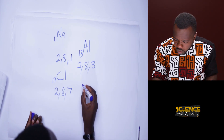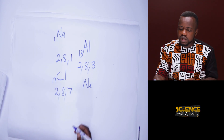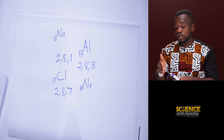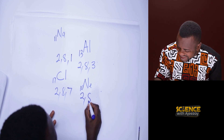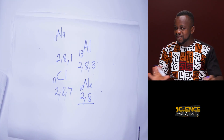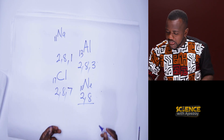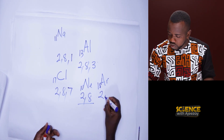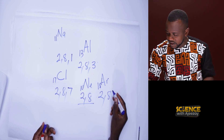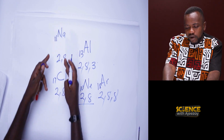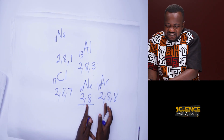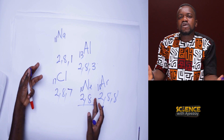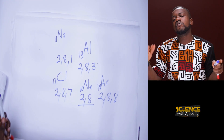Let's look at neon (Ne), the 10th element. Neon belongs to the noble gases or inert gases. Its configuration is 2 and 8, so neon is stable. Similarly, argon (Ar) is the 18th element with configuration 2, 8, 8 — argon is also stable. All the unstable elements want to look like neon and argon, achieving a stable electronic configuration, which leads to ion formation.